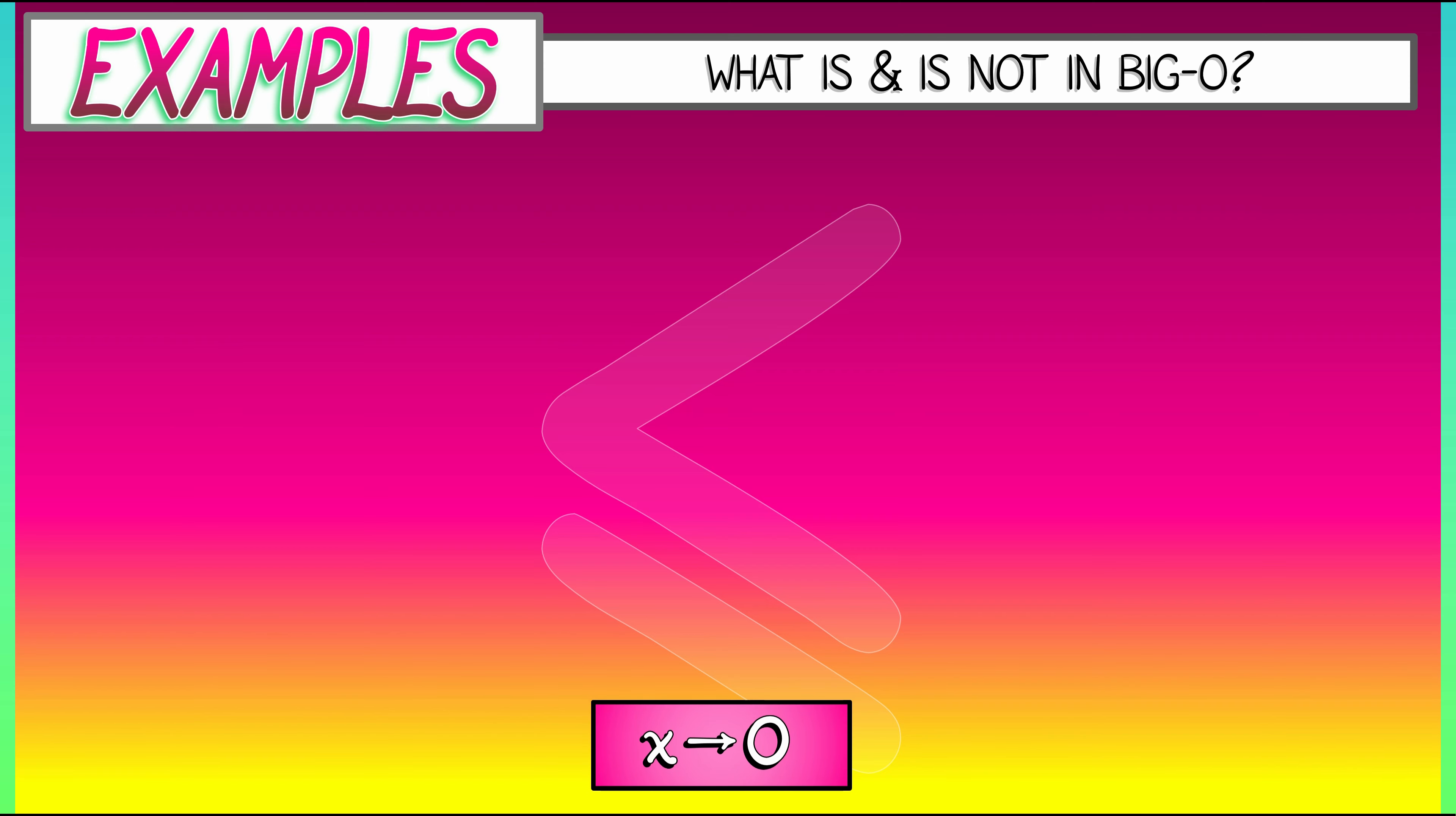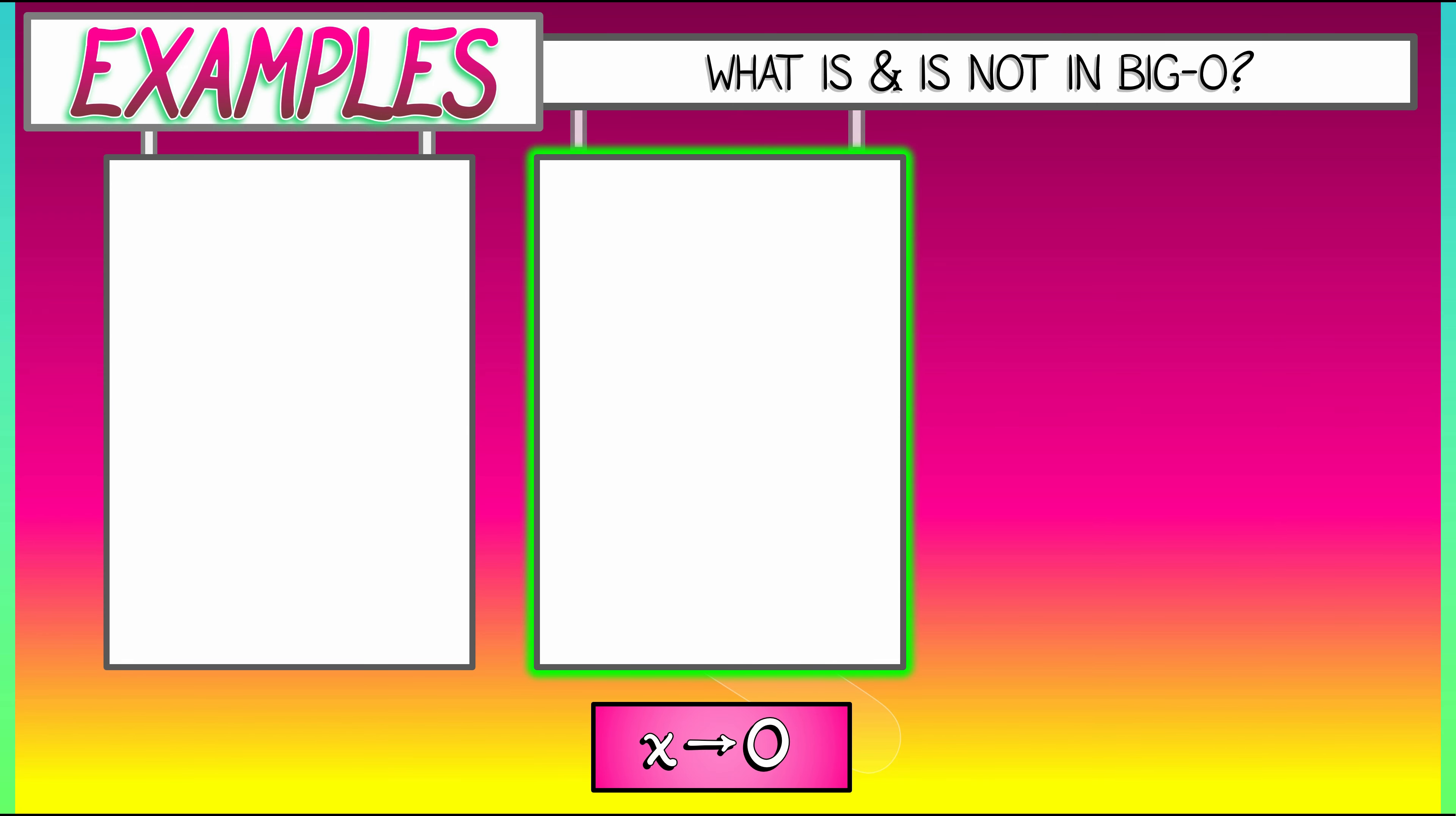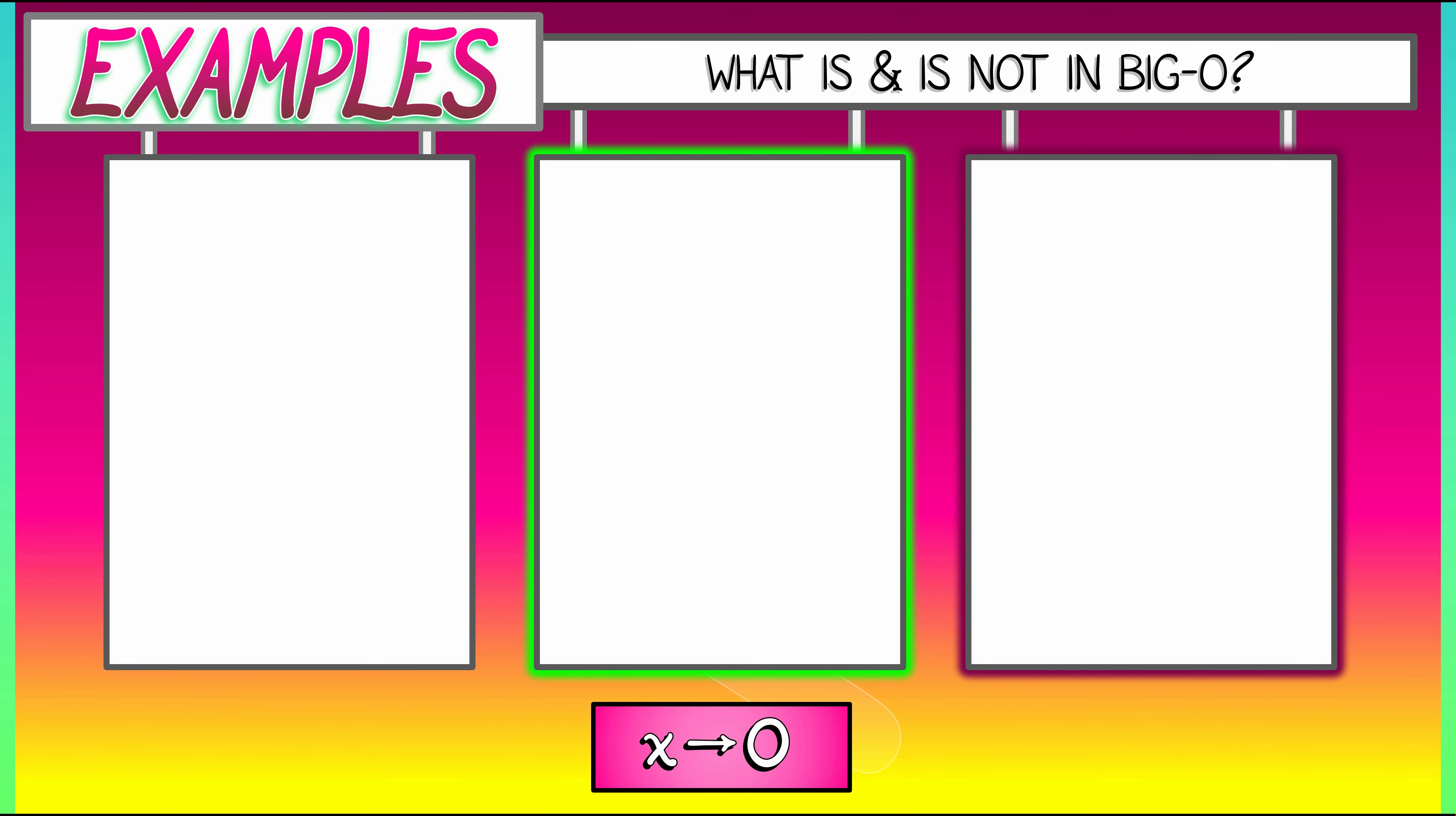First of all, work in the limit as x goes to zero. Very important to specify that. And let's consider a few examples. Let's start with tangent of x. Tangent of x, as x approaches zero, lies in big O of x, but not in big O of x squared. What do I mean? Why is that so?